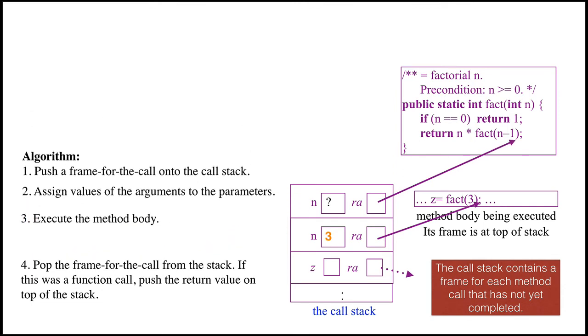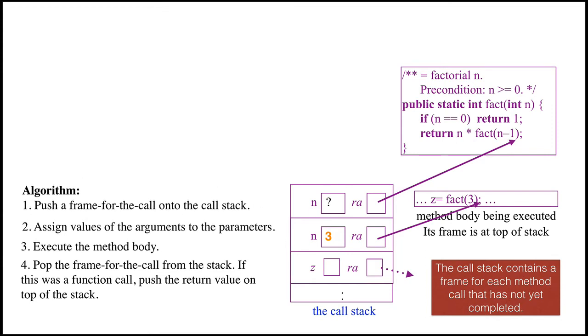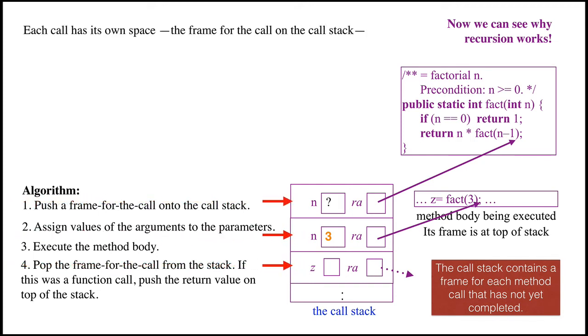And now you can see why recursion works. Each call has its own space on the call stack for its parameters, local variables, and return address.